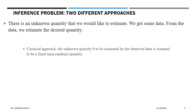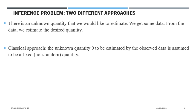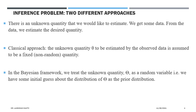In the classical approach, we treat the unknown quantity as a fixed number and try to estimate it by defining a likelihood function, then going for point estimation, interval estimation, or hypothesis testing. From today onward, we discuss the Bayesian framework, where the unknown quantity we want to estimate is treated not as a fixed number, but as a random quantity.